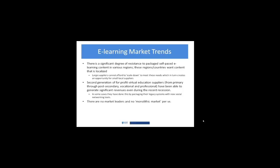Another interesting trend is that right now there's no market leader — it's not a monolithic market, it's very fragmented. There are literally thousands of suppliers competing in niche product areas. For the underserved buyer, there's significant revenue potential for suppliers who cater to those buyers and compete in that niche area. Finding the niche area is the hard part.